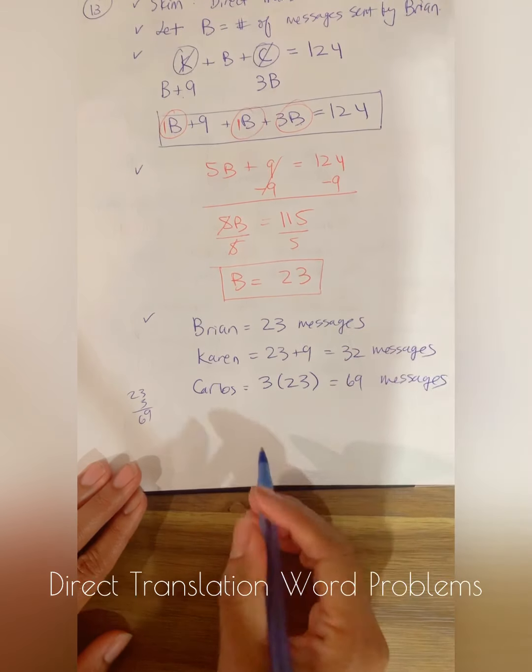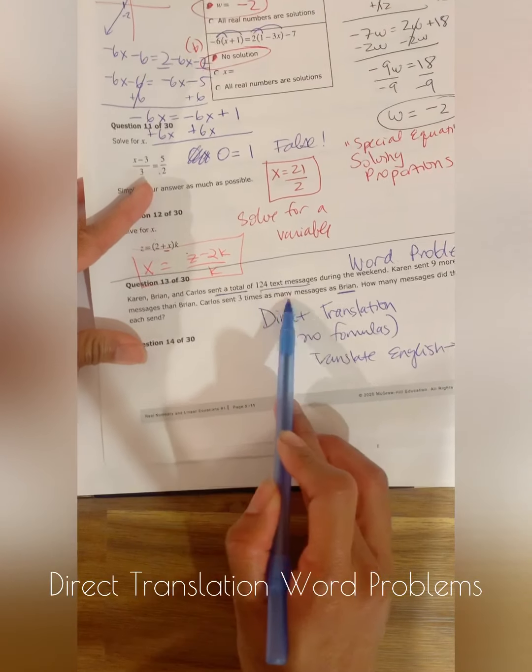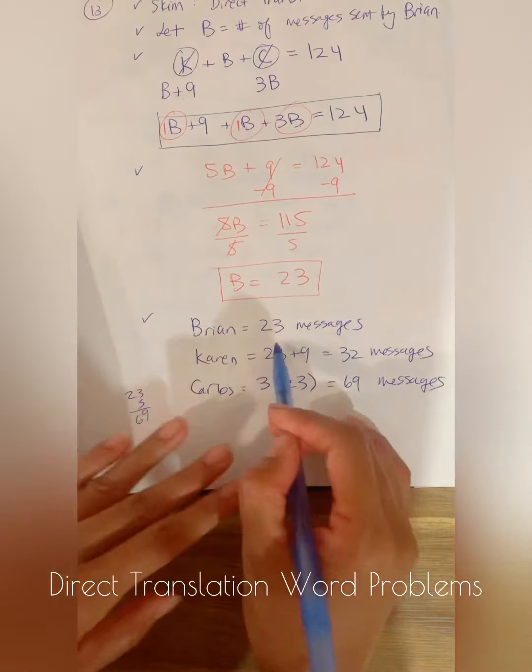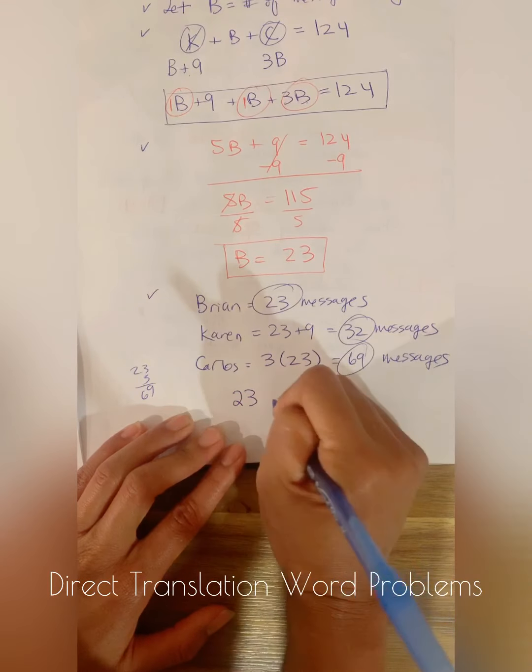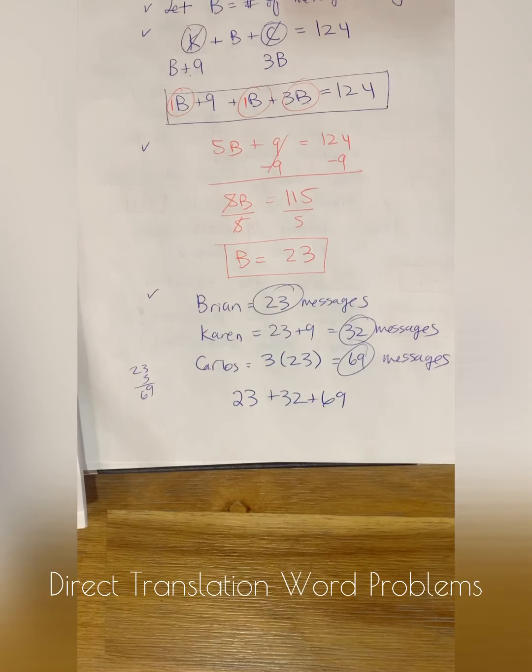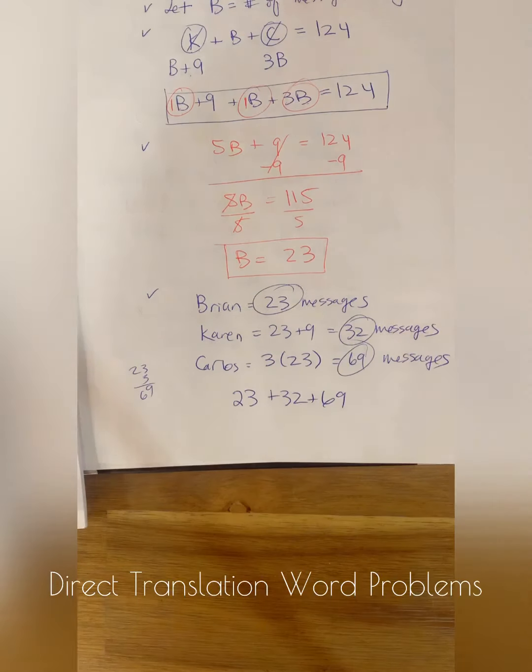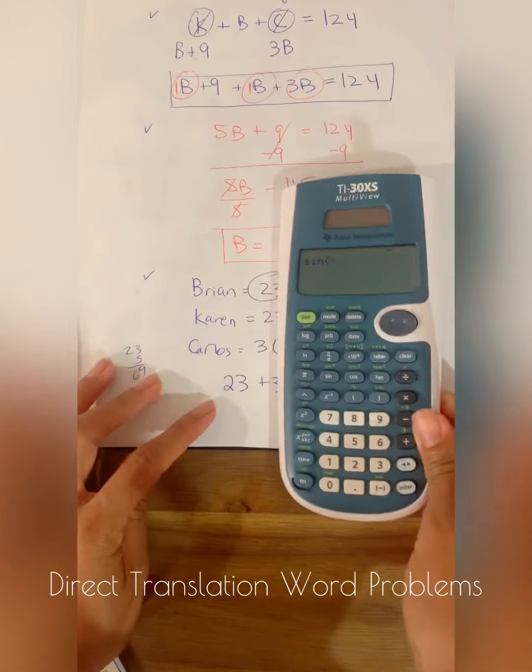And let's check our work, right? We know that it says that they sent a total of 124. Does this total to 124? So what's 23 plus 32 plus 69? Well, if we check this out with a calculator, I'm just going to do it by calculator just to save time.